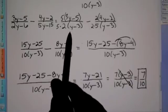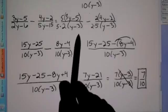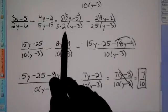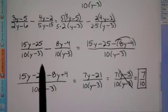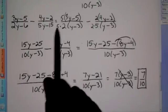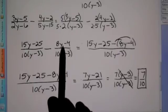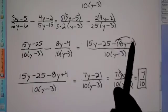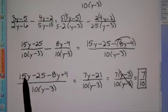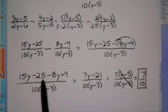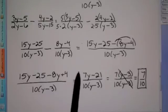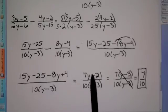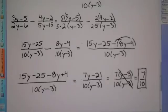Factor just the denominator to find your common denominator. Multiply top and bottom by 5 to get it to 10, and multiply by 2 to get it to 10. Distribute those values, combine the numerators, and distribute the negative. Combine like terms: 15y minus 8y is 7y, negative 25 plus 4 is negative 21. Factor out the 7, cancel with the denominator, and we're left with 7 tenths.